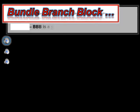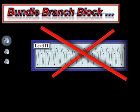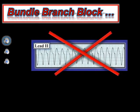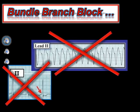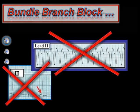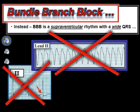Let's start with a few preliminaries. When we say bundle branch block, we are referring to the conduction disturbances associated with QRS widening and a supraventricular rhythm. By definition, this is not VT — ventricular tachycardia. It is also not WPW, in which conduction down an accessory pathway is the reason for delta waves and the QRS widening that we see. Instead, the conduction disturbance of bundle branch block refers to a supraventricular rhythm, be it sinus rhythm or other supraventricular rhythm, such as atrial fibrillation, atrial flutter, or a junctional rhythm.